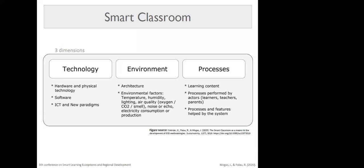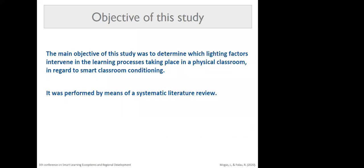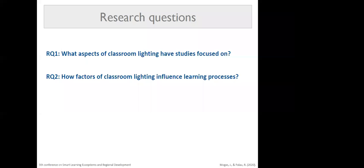In this communication, we will focus on lighting. From this conceptualization, through this systematic literature review, we wanted to study how lighting factors intervene in learning processes, specifically in the classroom. We posed two different research questions: the first was, what aspects of classroom lighting have studies focused on? And the second was, how do factors of classroom lighting influence learning processes?